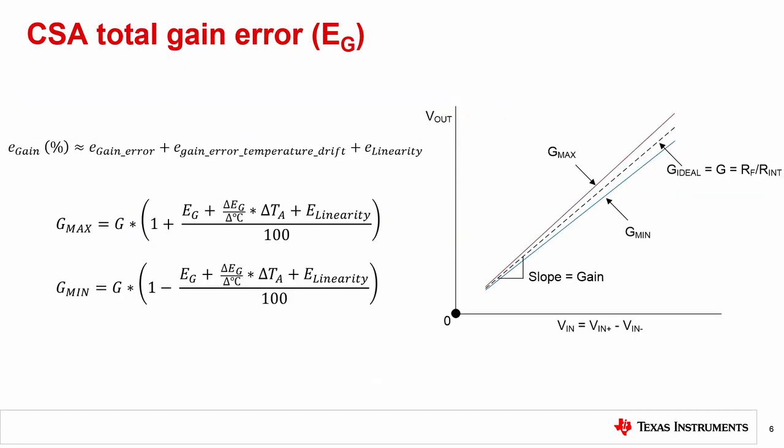The worst case gains of a CSA are the maximum and minimum possible gains. To calculate these worst case gains, simply add all of the gain error percentages together and then divide by 100 to yield a gain error factor. Finally, add or subtract this gain error factor from 1. Since most all gain error specifications are symmetrical about zero, the maximum and minimum gains are symmetrical about the nominal device gain.